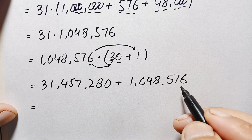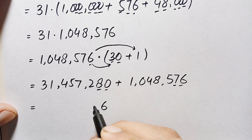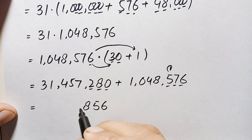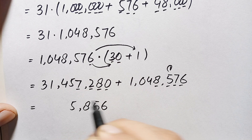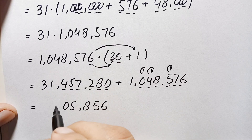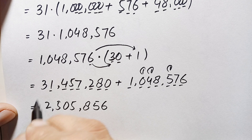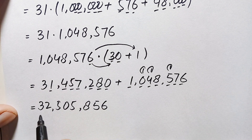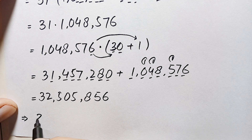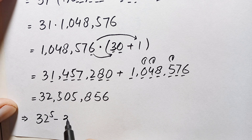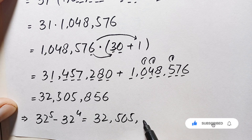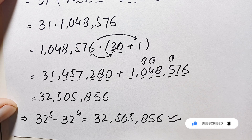Adding 31,457,280 plus 1,048,576: starting from the ones position, 6 plus 0 is 6, 7 plus 8 is 15 so write 5 carry 1, 5 plus 1 is 6, 6 plus 2 is 8, 8 plus 7 is 15 so write 5 carry 1, 4 plus 1 is 5, and so on. The addition gives 32,505,856. Therefore the value of 32 raised to power 5 minus 32 raised to power 4 is 32,505,856.